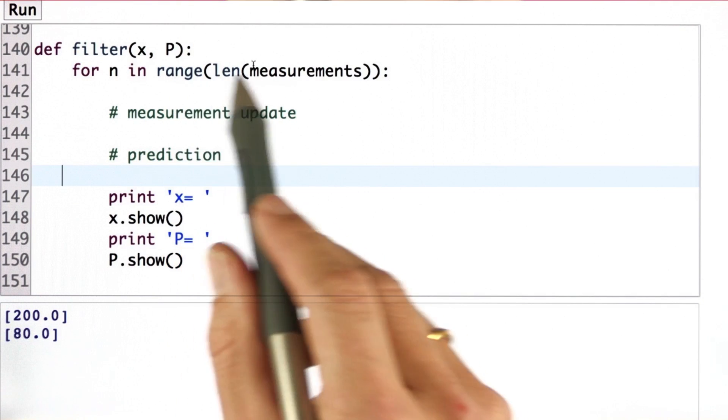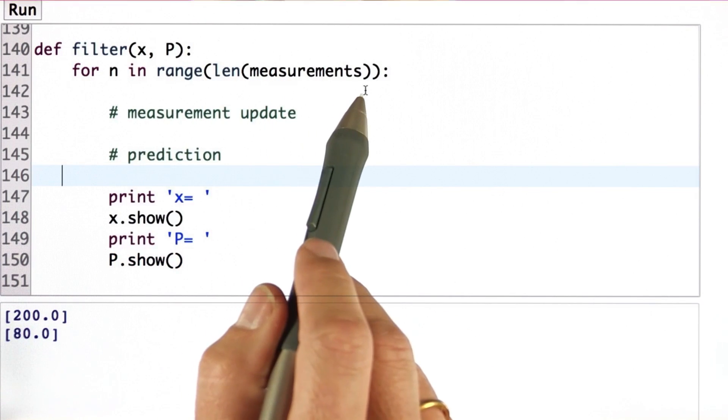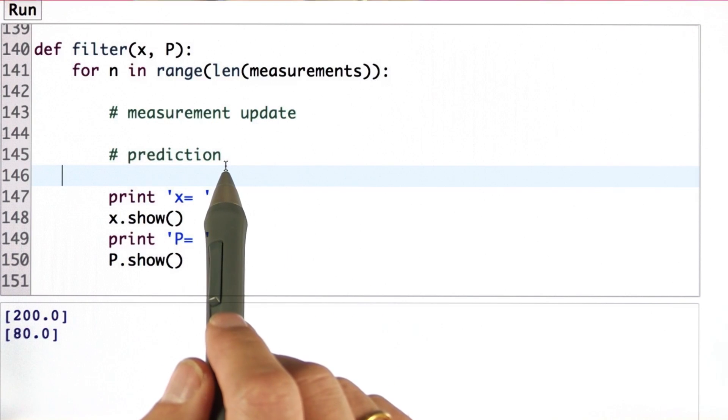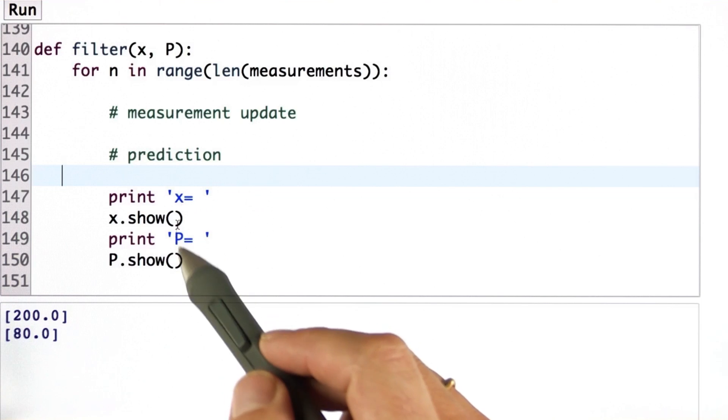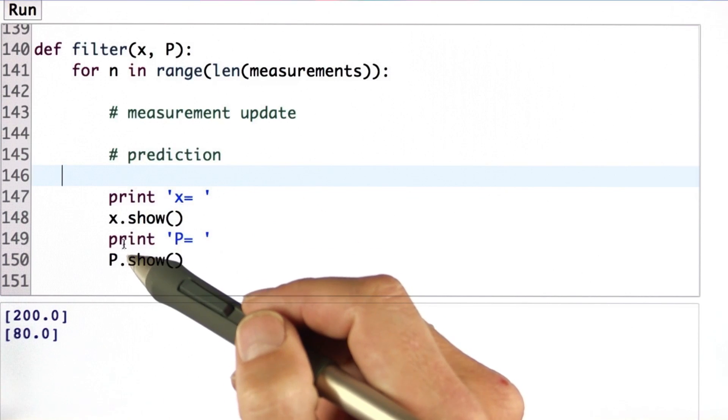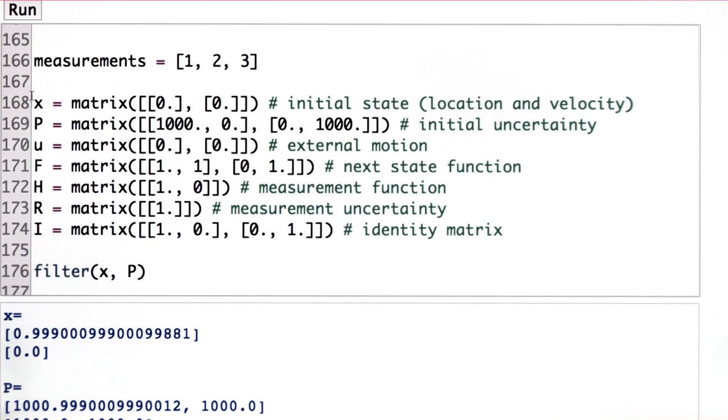So here is my empty procedure filter that you have to fill in, where I go through all measurements, and then build the measurement update, and then the motion update, the prediction. And then I just print out the resulting estimates. I do this a number of times, three times in this case. And once you fill this in, and I hit the run button, I get the following output.